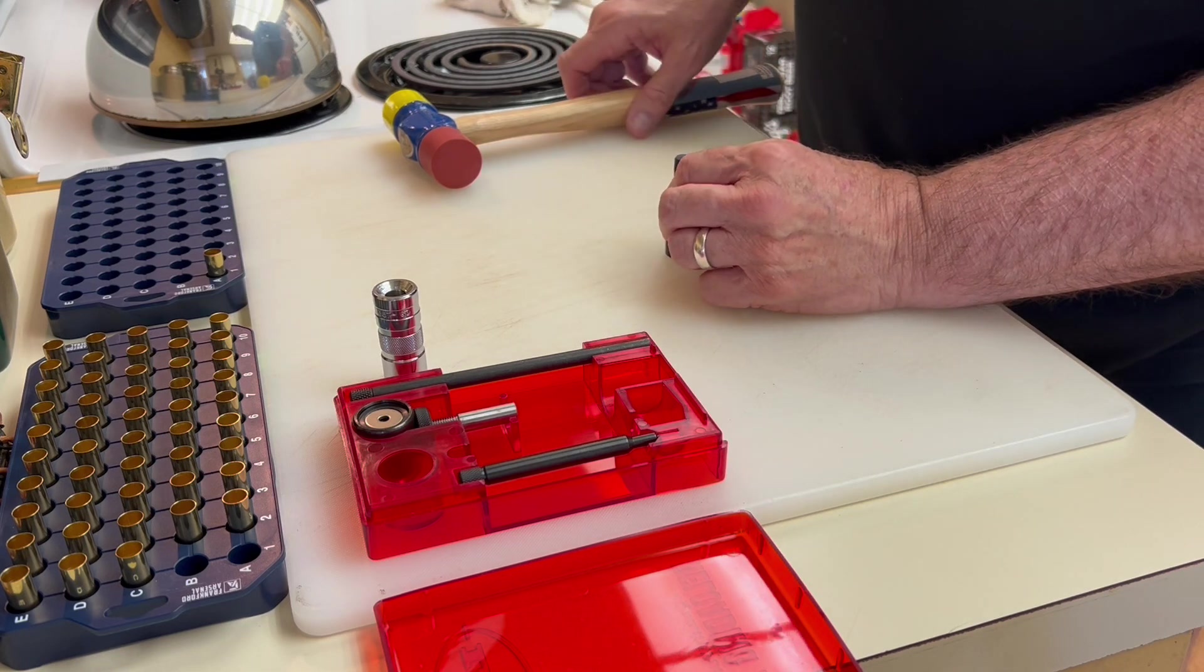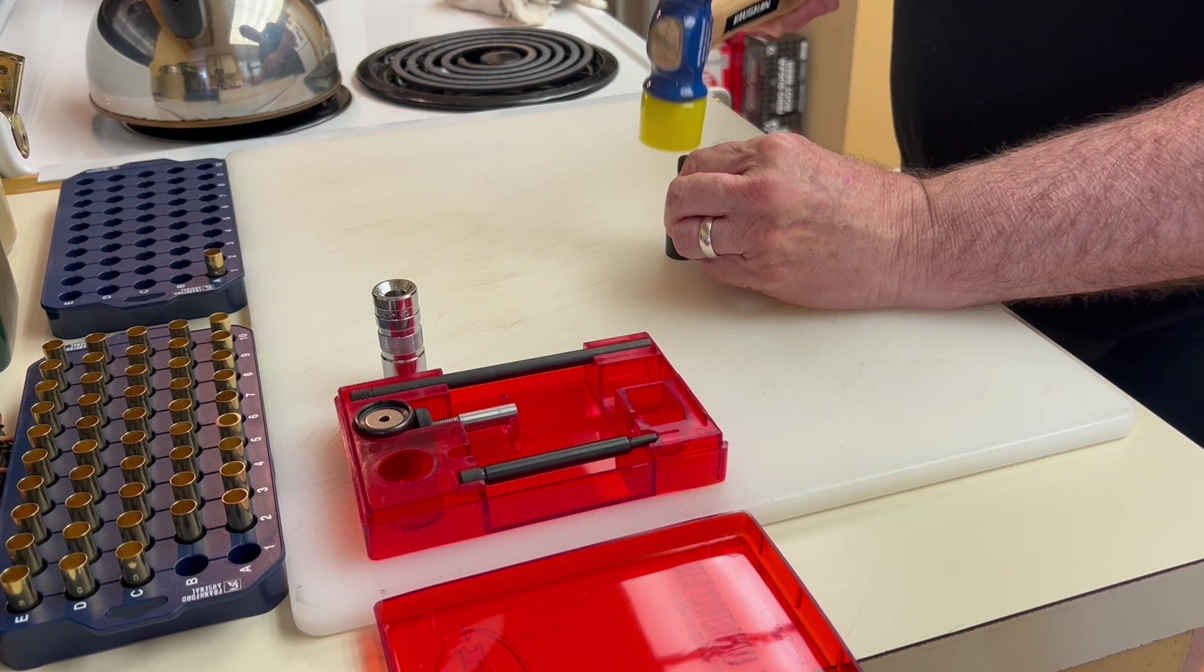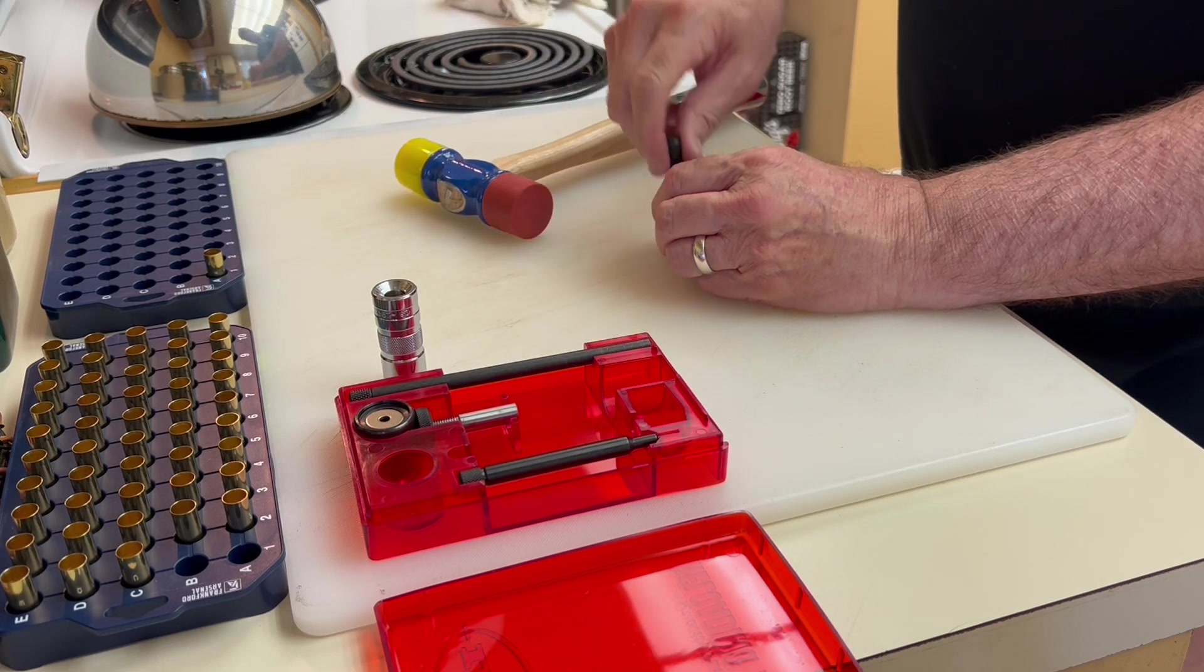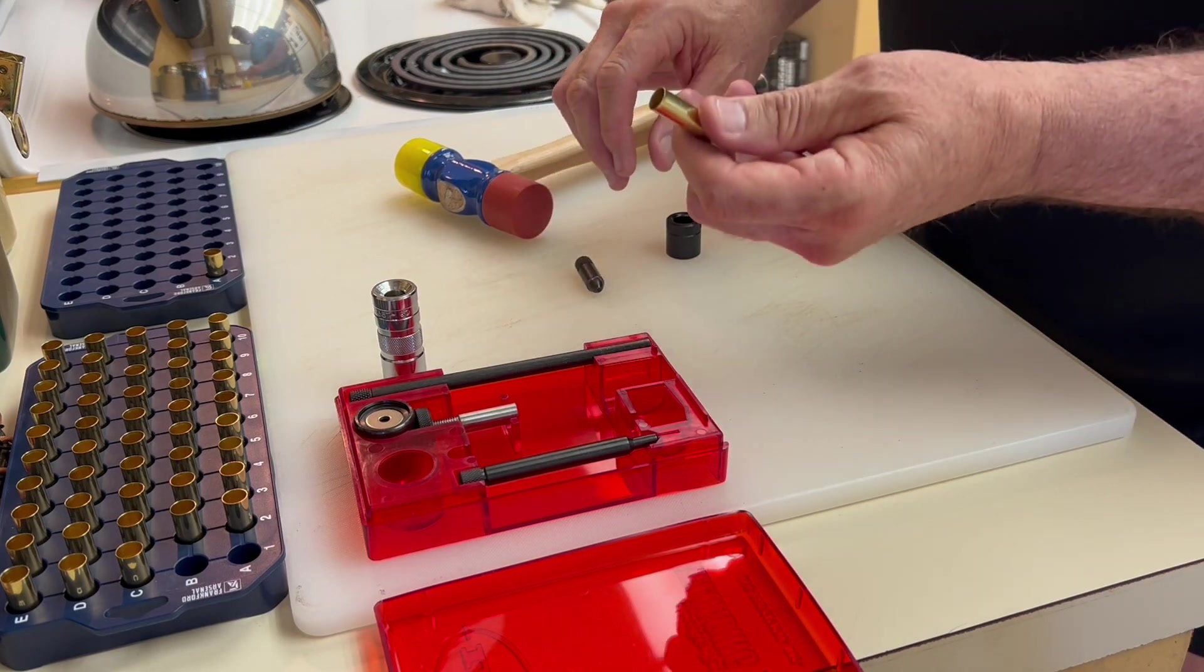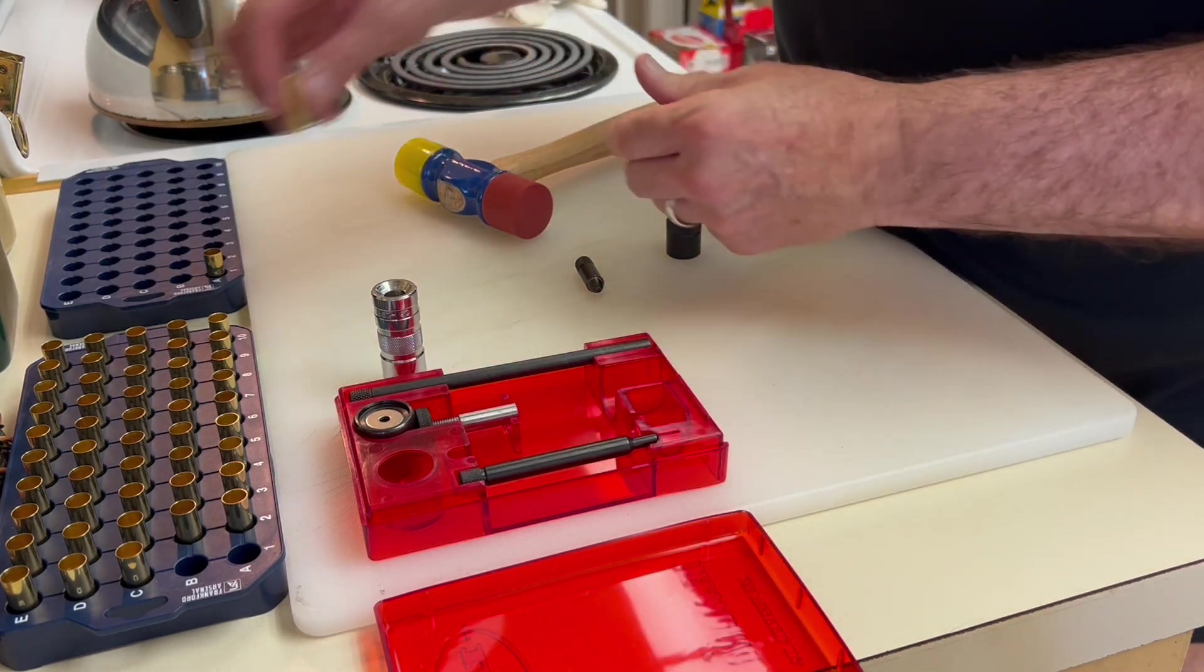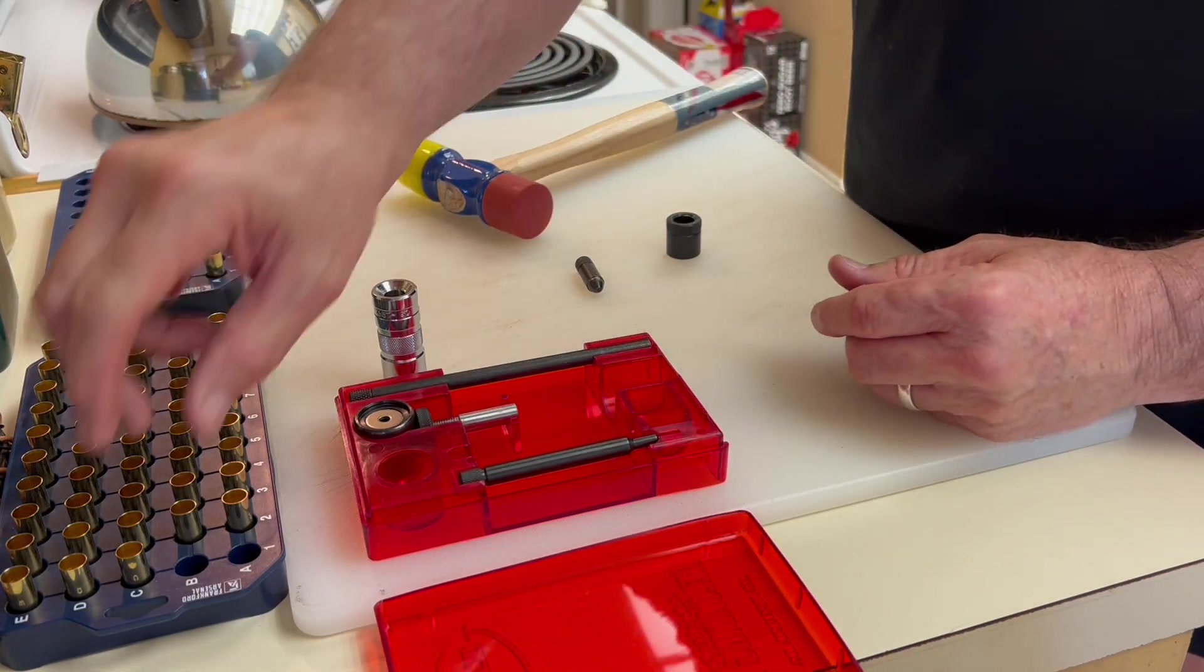Now I'm going to do the case mouth expanding step. Give you a little tool to flare the case mouth out just enough to accept a bullet. You have to do this with your straight wall cases like 38 special, 357.